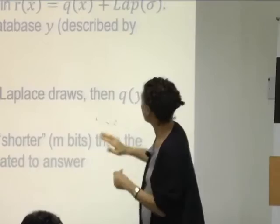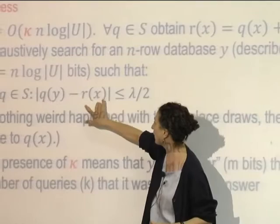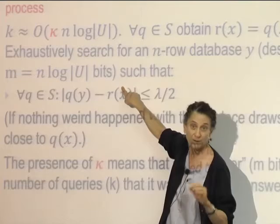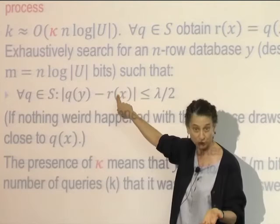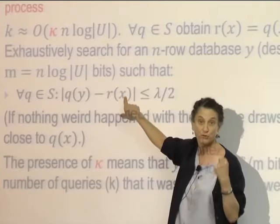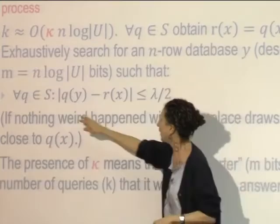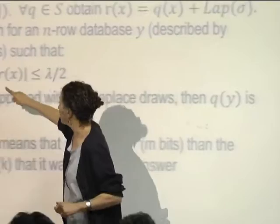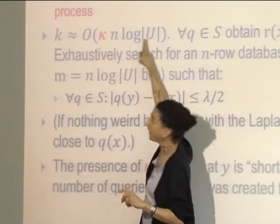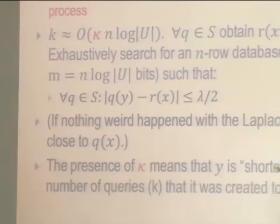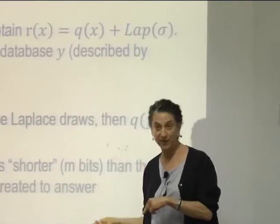We exhaustively search for a database that's N rows — meaning it's N times log of the universe size number of bits long. That database must give relatively accurate answers where accuracy is measured against the noisy thing R of X, not the truth. If it's close to the noisy thing and nothing weird happened in the Laplace sampling, it will be close to the truth. We're ensuring privacy by using R of X rather than the true Q of X. We're looking for an N-row thing with error of at most lambda over 2 on every query in our sample set. Notice this is N log N bits — shorter than the number of queries it's answering. That was the condition described on the previous slide.